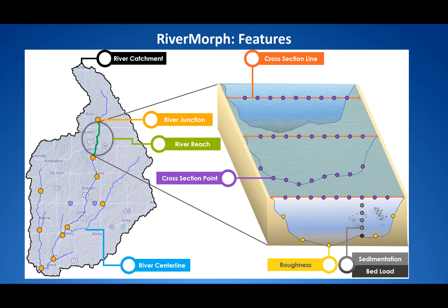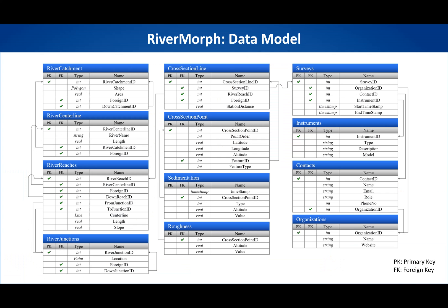Here is a view of river features that will be supported by RiverMorph. We have a catchment that includes a stream network, and a reach within that stream network contains detailed river morphology data. Specifically, we have river geometry in the form of cross-section points, bed load information, and channel roughness information stored. There is a detailed relational database behind these features, and this is ongoing work that will be updated with new features as we move along the project timeline.